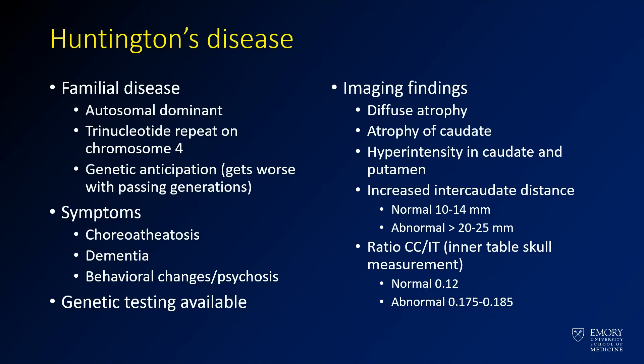This is a familial disease which is autosomal dominant. It's due to a trinucleotide repeat which gets worse in subsequent generations. The symptoms that these patients get are essentially a movement disorder with chorioathetosis and additional dementia. There is genetic testing for this disease and it has 100% penetrance.